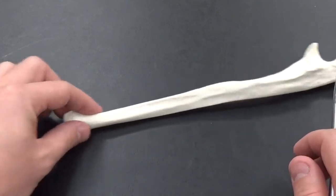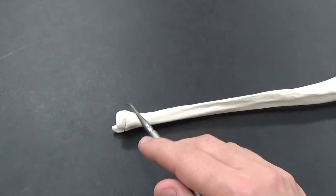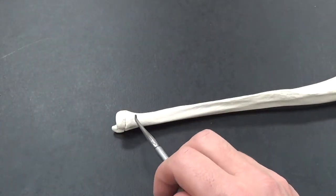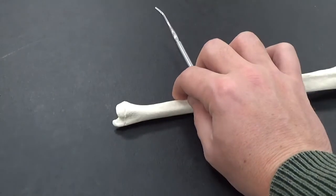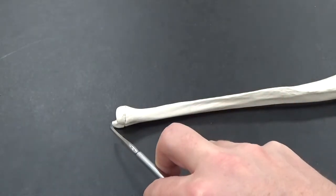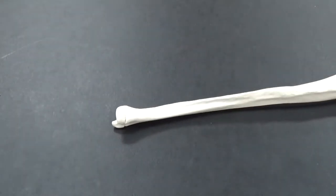The other end, so actually in this case the bottom, is the head of the ulna, and then it has this little projection sticking off the side down here. It's called the styloid process.